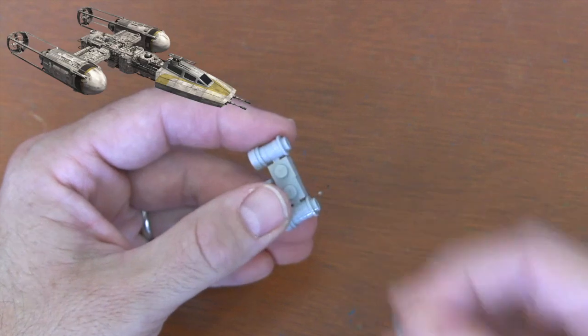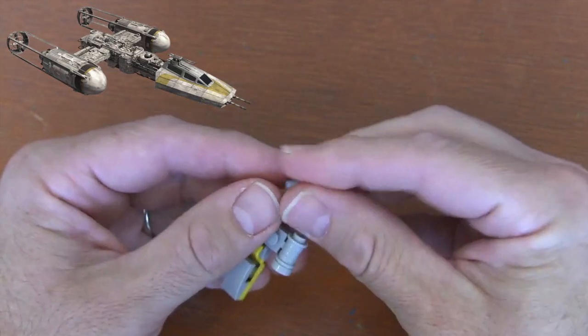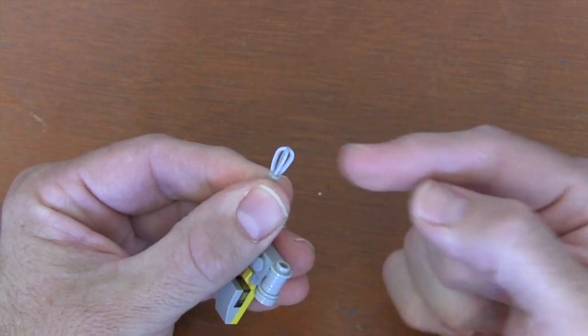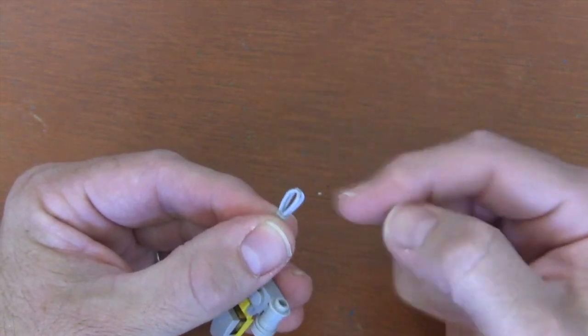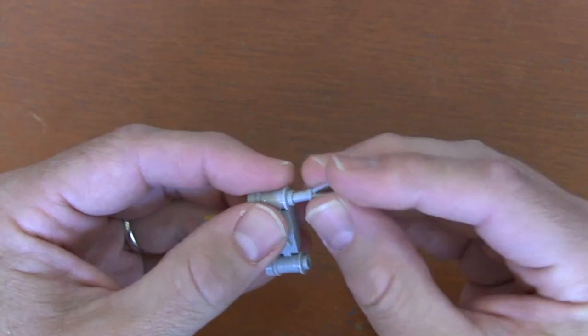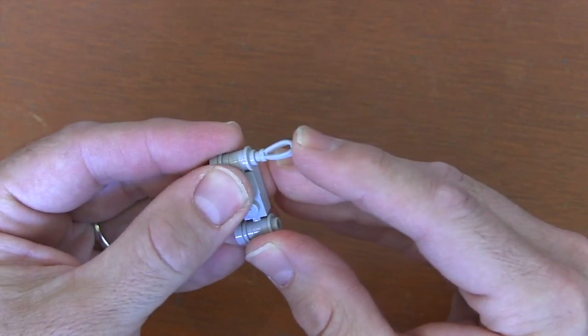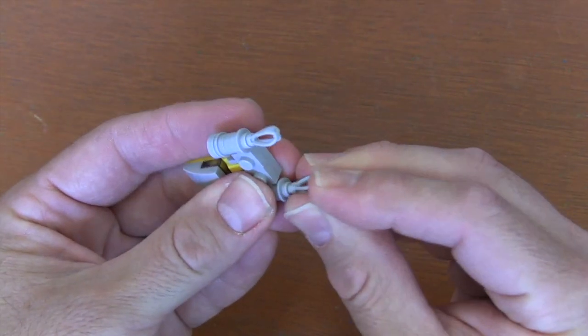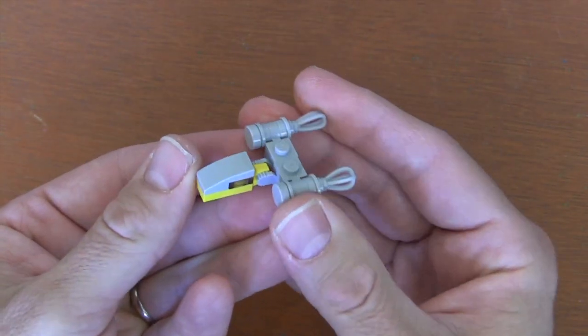Then to create those kind of grated engines on the back, I'm gonna grab two of these minifigure whisk pieces. Actually, it was this piece that inspired the design. I started with this piece and just kind of built everything else around it. I put those whisks into that 1x1 plate with the hole in the stud, and here is my micro Y-Wing fighter.